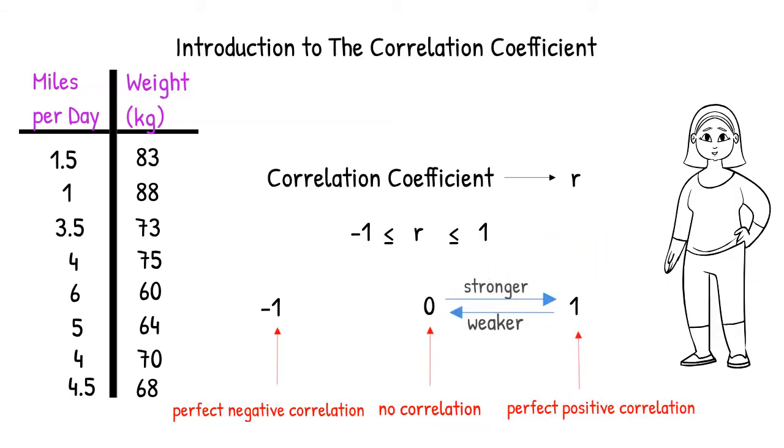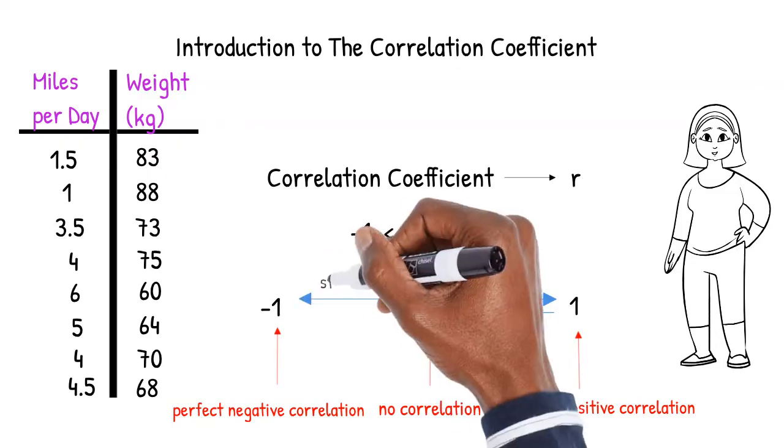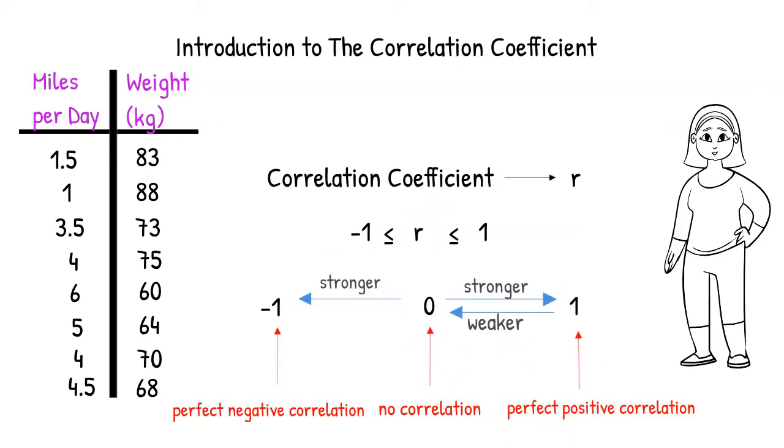The closer the correlation coefficient is to negative 1 on the negative side, the stronger the correlation. And the closer to 0, the weaker the correlation.